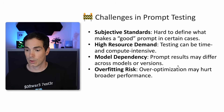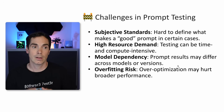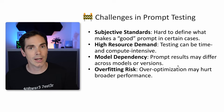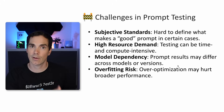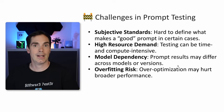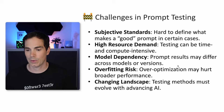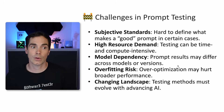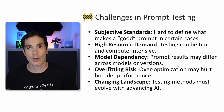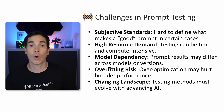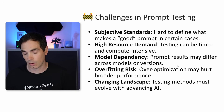Overfitting risks: over-optimization may hurt broader performance. Don't overdo the tweaking of prompts. If a second or third version of a prompt still delivers good results, go with that and see how it evolves over time. Changing landscape: testing methods must evolve with advancing AI. We need to adapt to new technologies, new models, new ways of writing prompts, system prompts, or using agents overall.